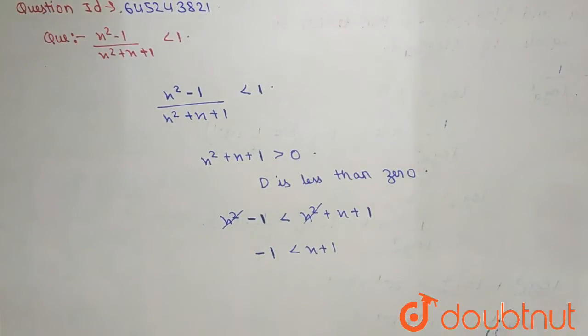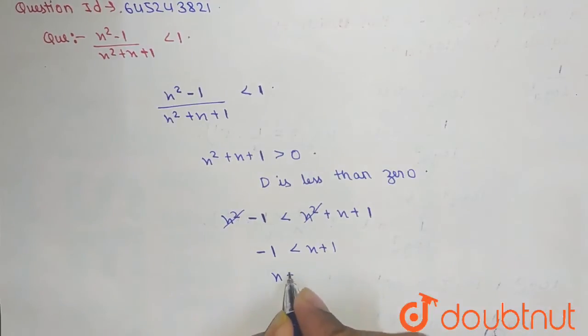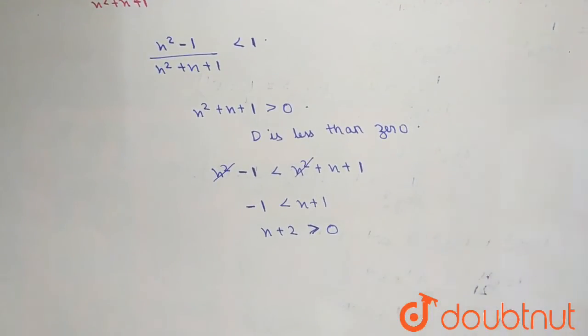what we will get? We will get X plus 2, this X plus 2 is greater than 0. So from here, what we will get? We will get the value which is X is greater than minus 2.